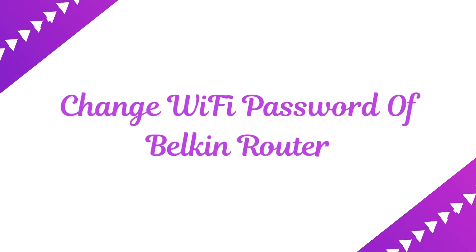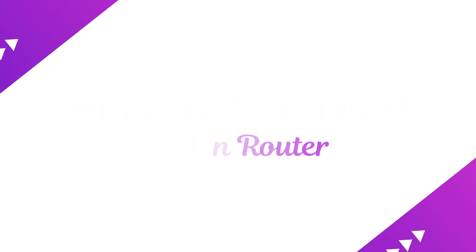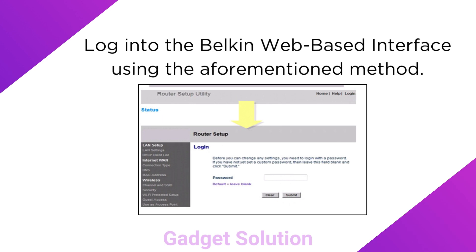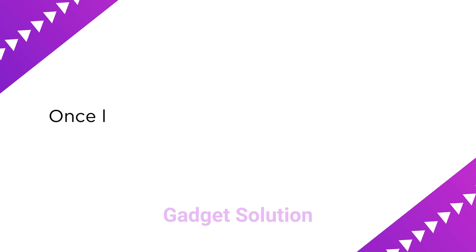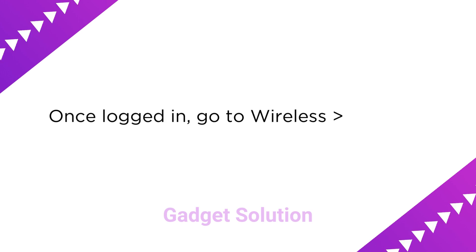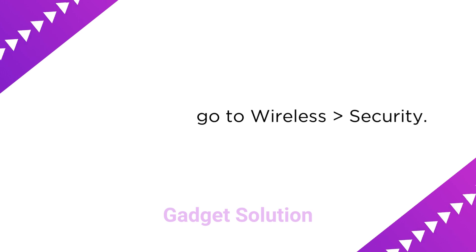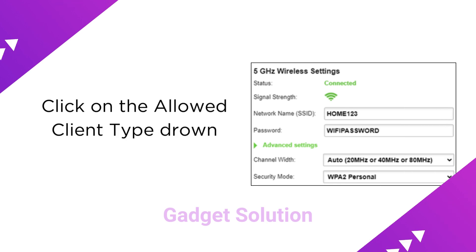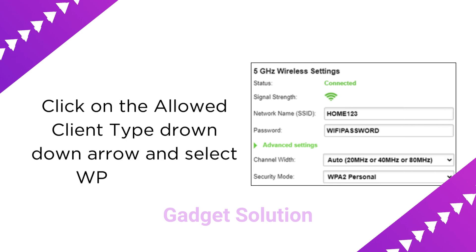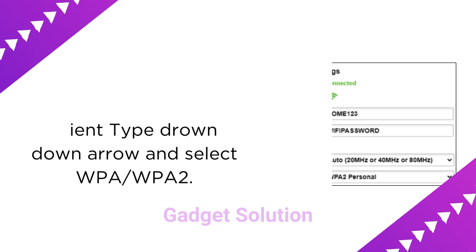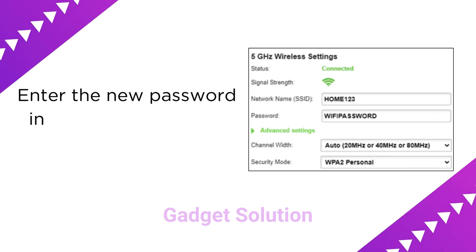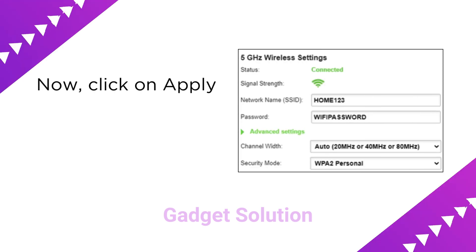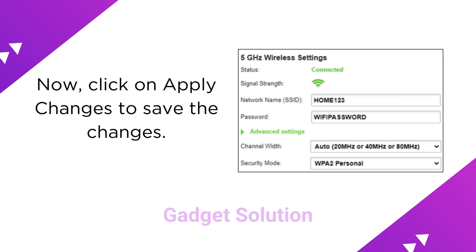To change the Wi-Fi password of your Belkin router, log in to the Belkin web-based interface using the aforementioned method. Once logged in, go to Wireless > Security. Click on the allowed client type dropdown arrow and select WPA/WPA2. Enter the new password in the password PSK field, then click on Apply Changes to save the changes.